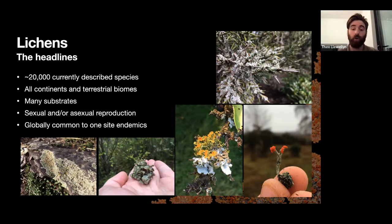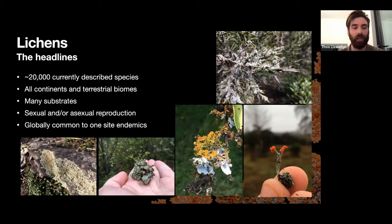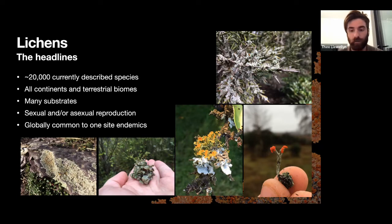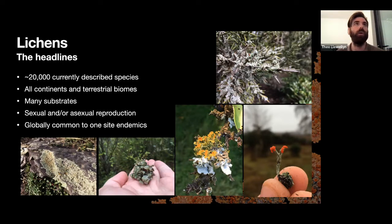Lichens are able to grow on a whole range of different substrates. Many will grow on rocks — the saxicolous lichens, such as the one in the bottom left. They can also grow directly on the soil, like the genus Cladonia. And some of the more emblematic ones grow on plants and trees — the epiphytes. These two species here you can see growing on two very different trees.